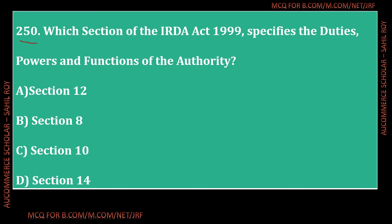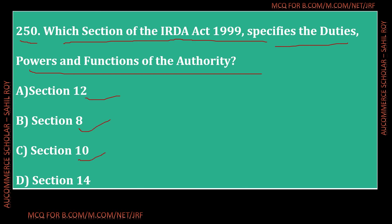Question number 250: Which section of the IRDA Act 1999 specifies the duties, powers, and functions of the authority? Options: Section 2, Section 8, Section 10, or Section 14. The correct answer is Option D - Section 14. Section 14 of the IRDA Act 1999 specifies the duties, powers, and functions of the authority.